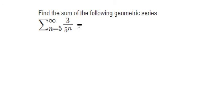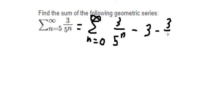We have the summation from n equals zero to positive infinity of 3 over 5^n. We need to subtract 3, 3 over 5...